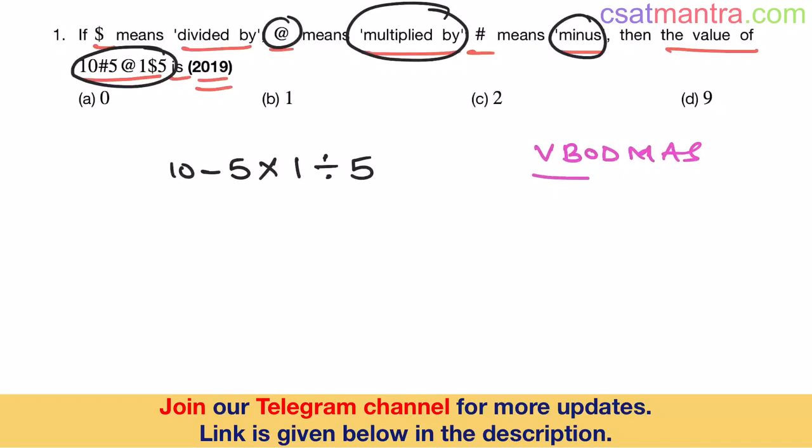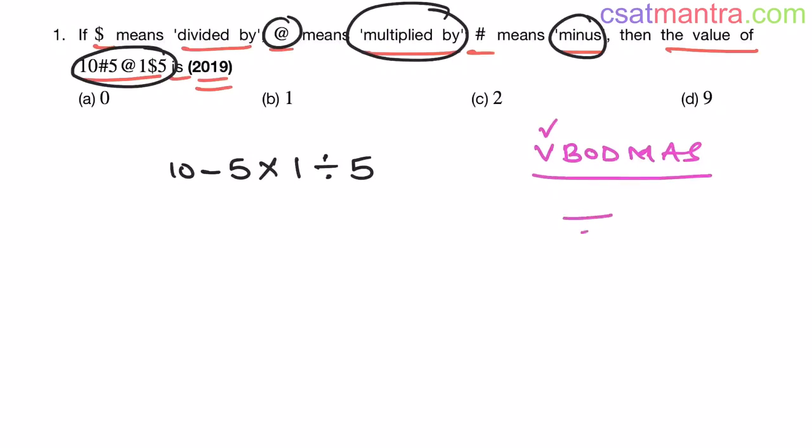Now we know V BODMAS rule. V for vinculum. Vinculum means bar on a number my friends. We do not have vinculum in this expression. B for bracket. Brackets are also not there. O for of. This is also not there.